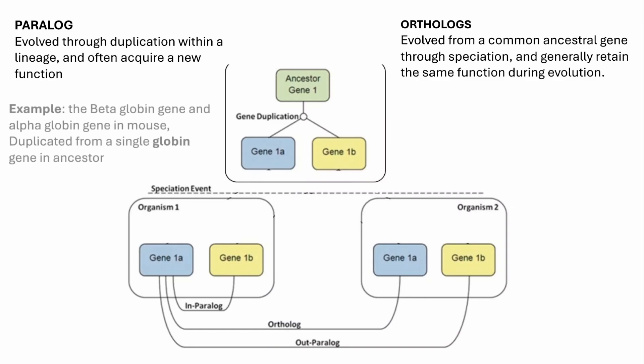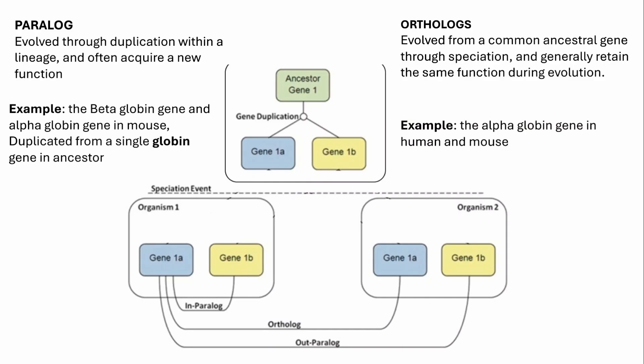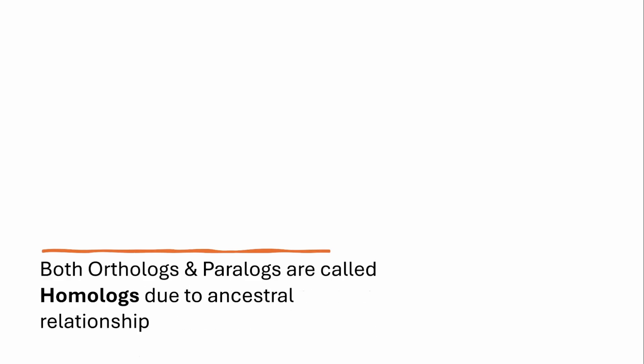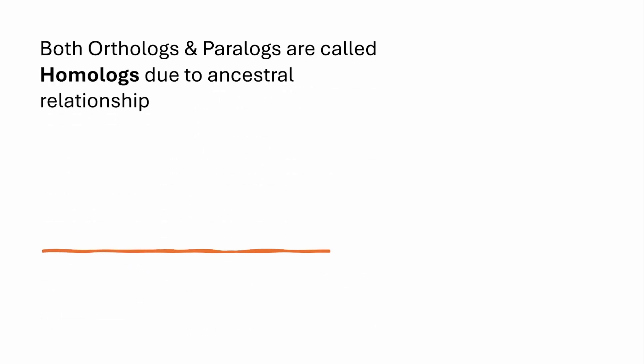As an example of paralogs, we have the beta-globin gene and alpha-globin gene in mouse that are duplicated from a single globin gene, whereas the alpha-globin gene in mouse as well as humans will be orthologs of each other. Both paralogs and orthologs are known as homologs due to their ancestral relationship.